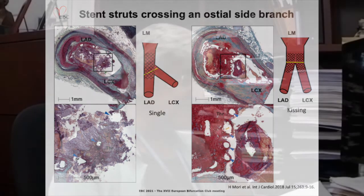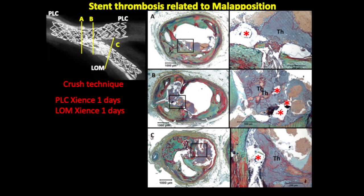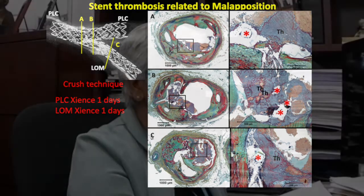Here is an example of a crush technique that led to stent thrombosis purely because of malapposition. The struts are shown in red — you can see they are malapposed. There is an underlying plaque, and you can see malapposed struts and luminal thrombus. Malapposition occurred during crush stenting.